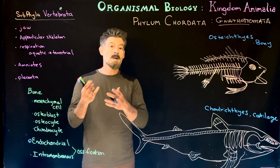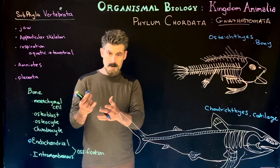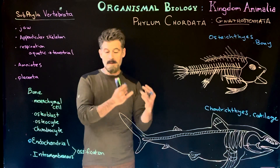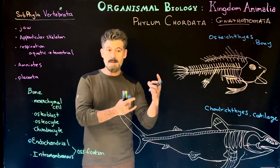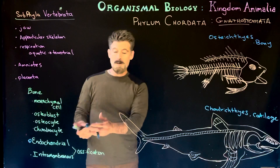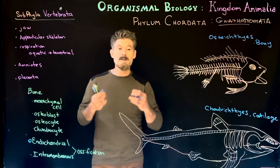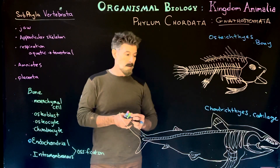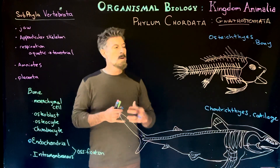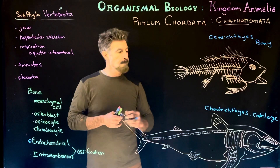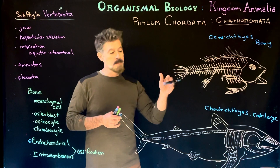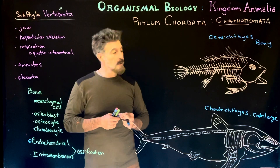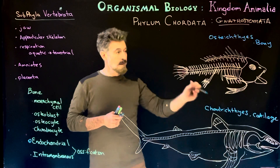In endochondral ossification, the bone is formed from cartilage first — it doesn't turn into bone, but is replaced by bone. The cartilage is taken away and then bone cells, the bone matrix, and osteoblasts make the bone in place of the cartilage. Some cartilage remains around or between bones. First, we're going to look at the groups of organisms, some of their characteristics, and what is similar and different about them.